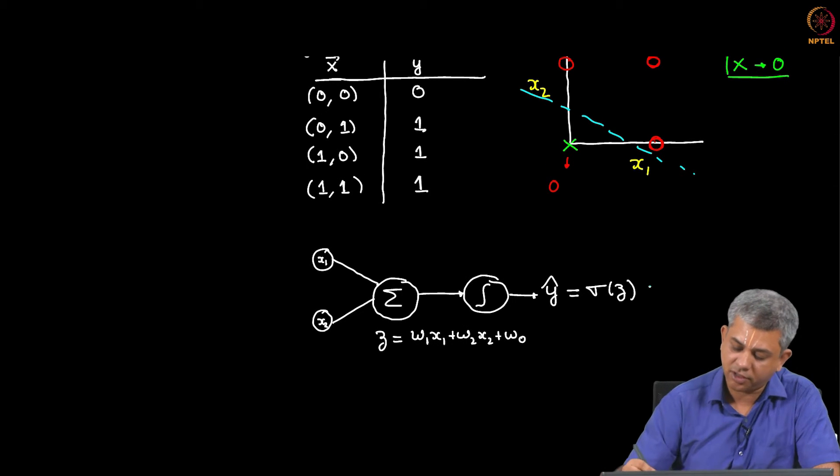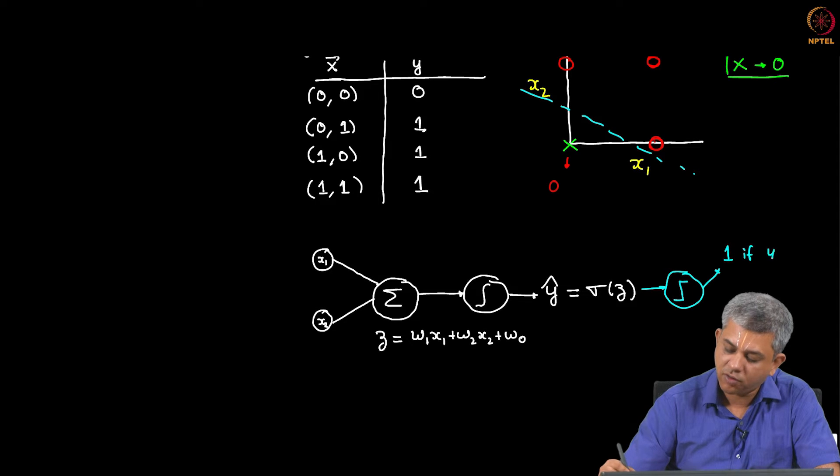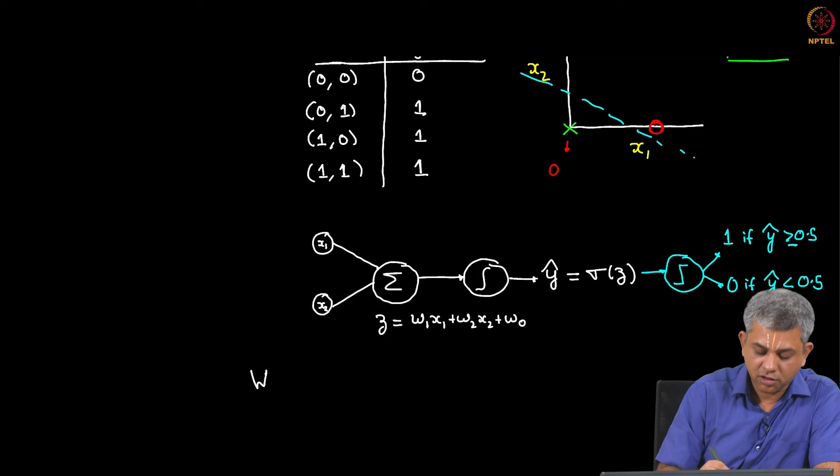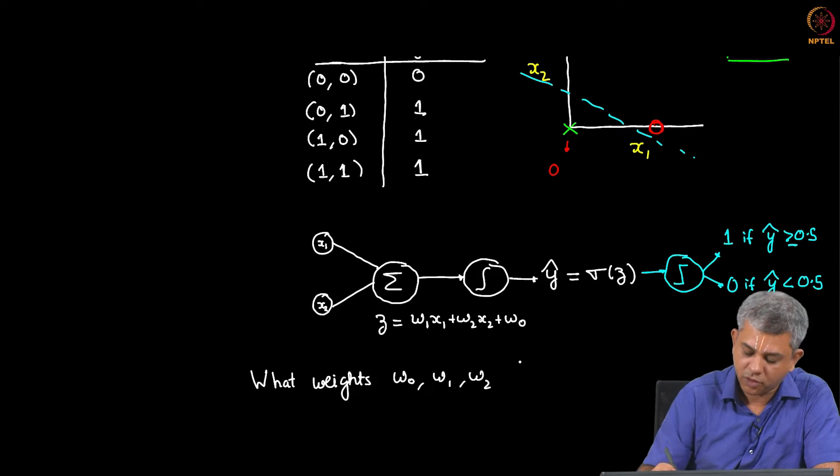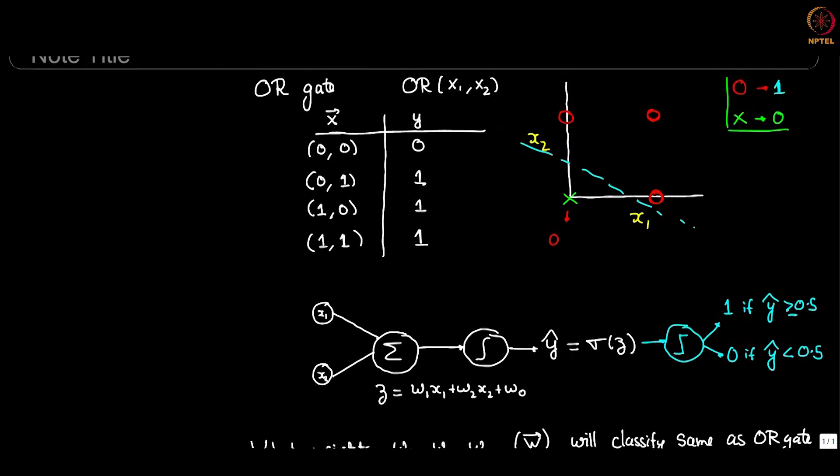Finally, we classify after this as our prediction is 1 if Y hat is greater than 0.5 and it is 0 if Y hat is less than 0.5. We can just arbitrarily decide that the equal to sign goes to 1. So the question we are asking is what weights W0, W1, W2, all put together basically W vector, will classify the same as the OR gate. If we do that we have essentially represented the OR gate as a simple neural network, or as a simple logistic regression network.